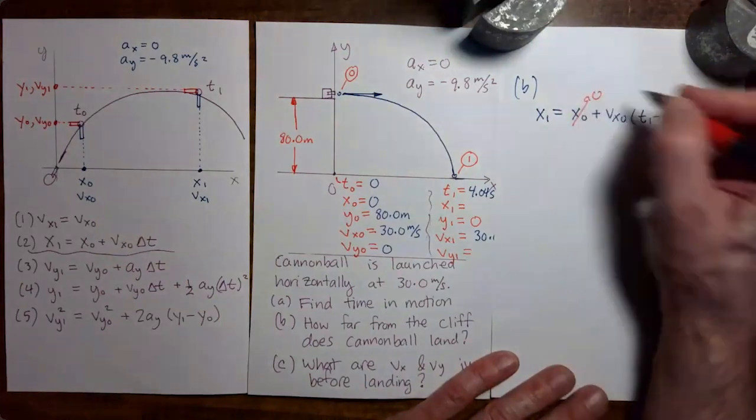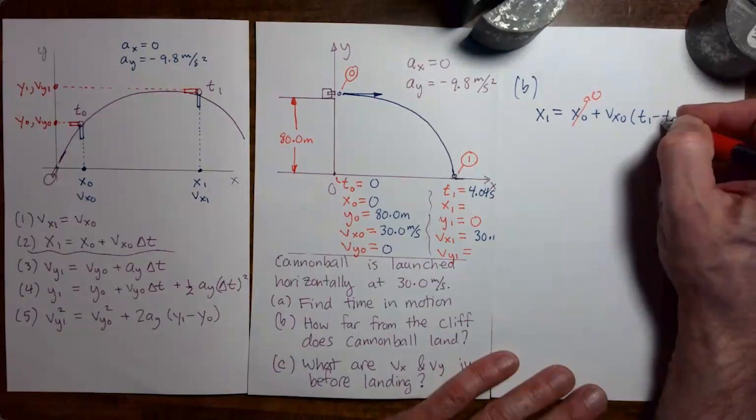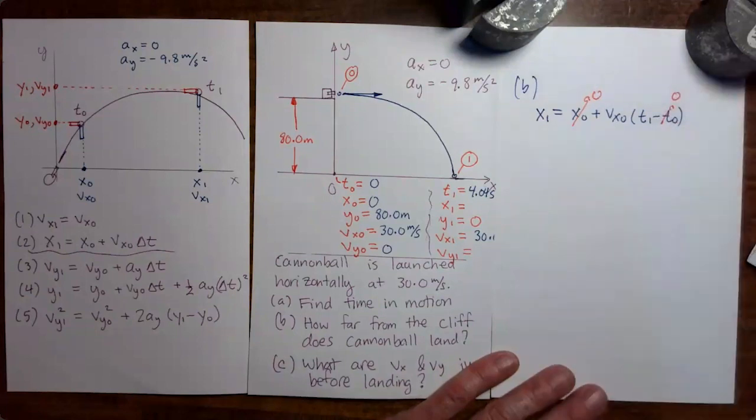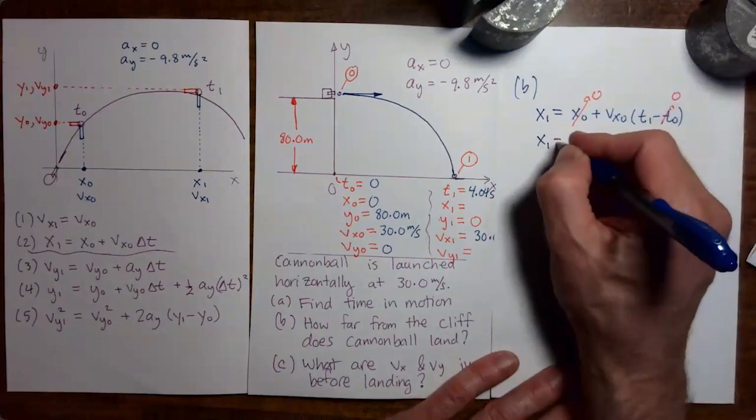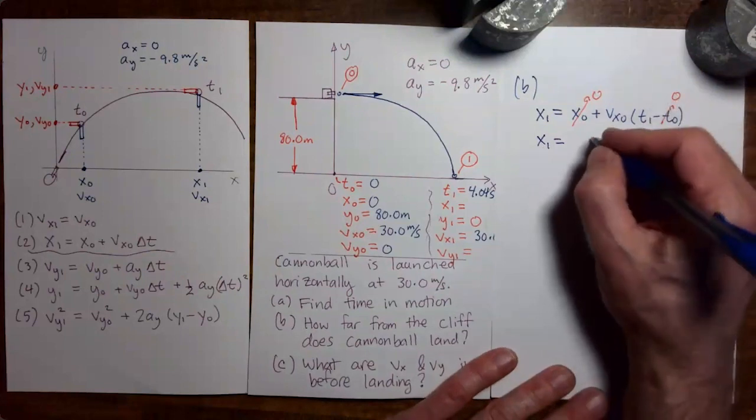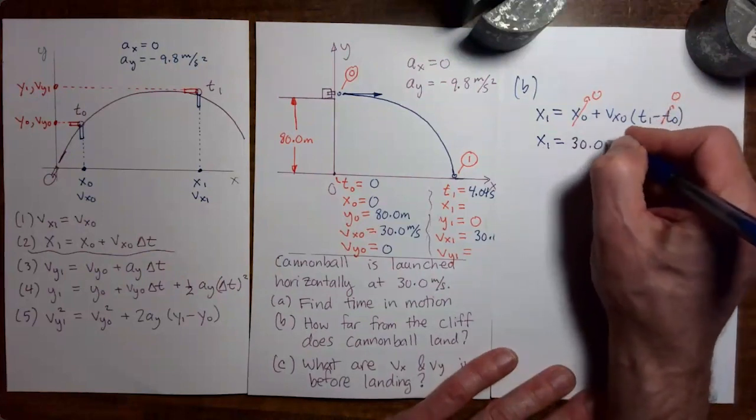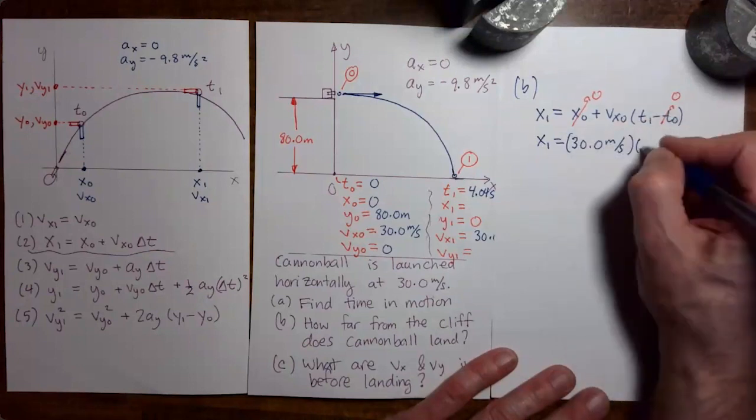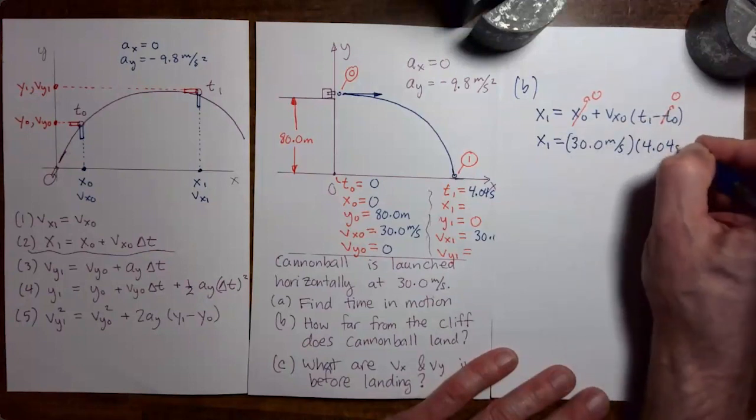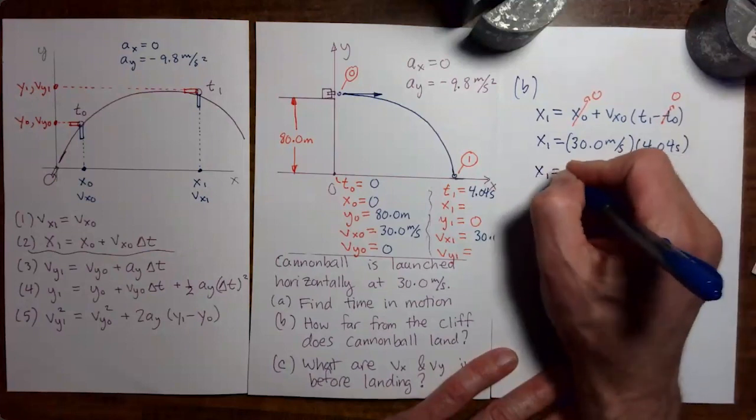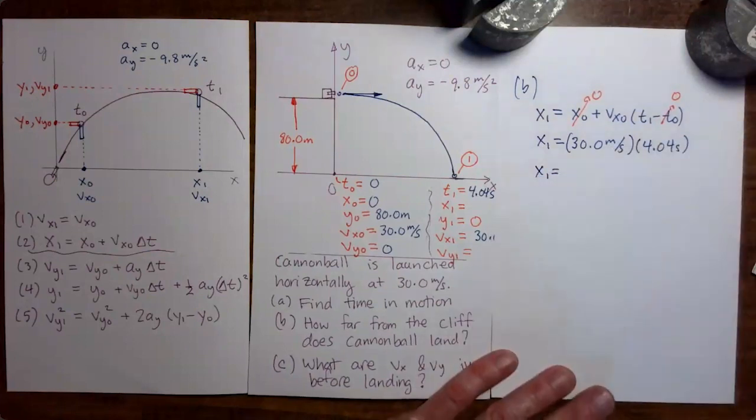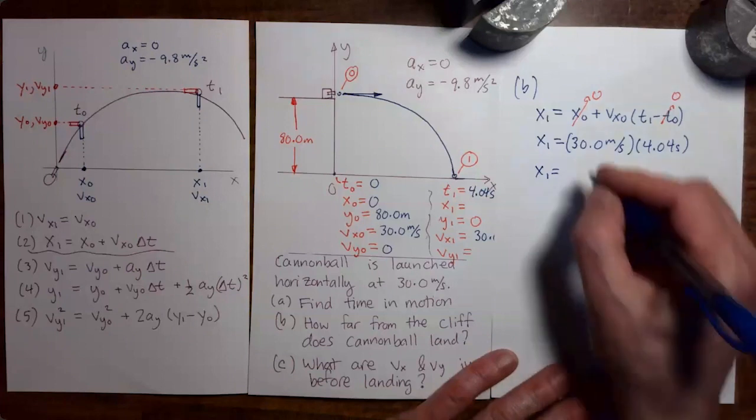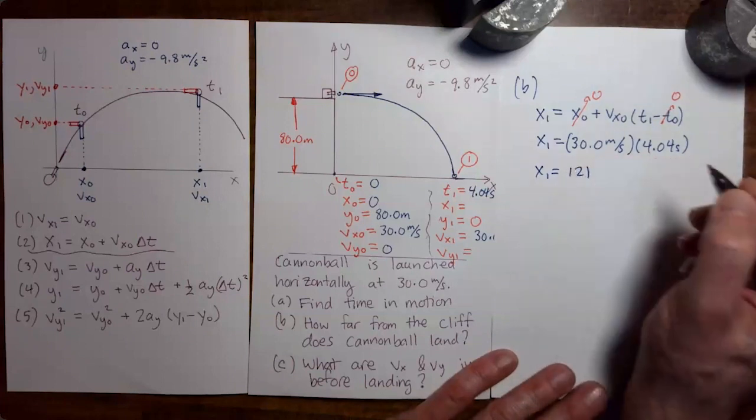And everything here is known. x0 is 0, t0 is 0. So let's just put in the other two things. We have x1 is vx0, 30 meters per second, and then time 1, 4.04 seconds. So do the multiplication. I got 121 meters.